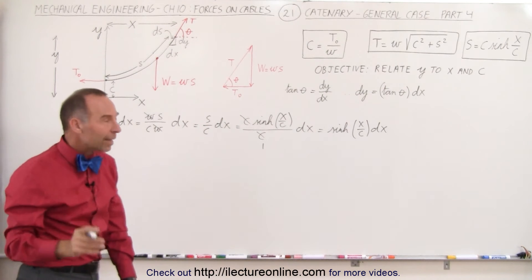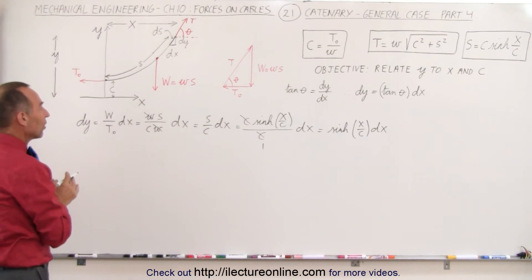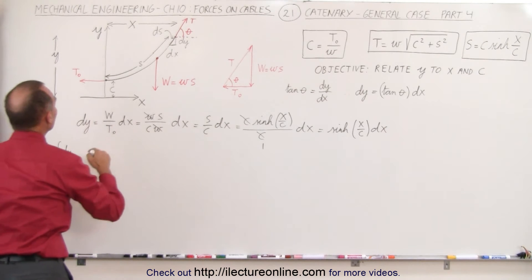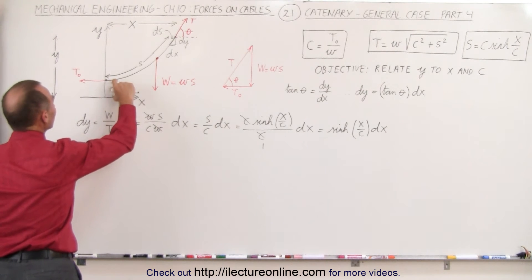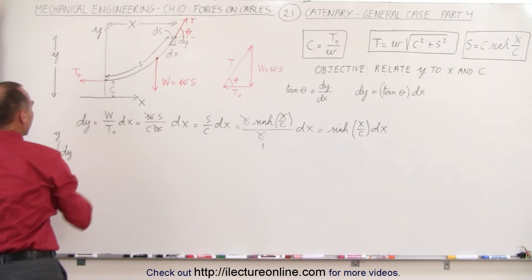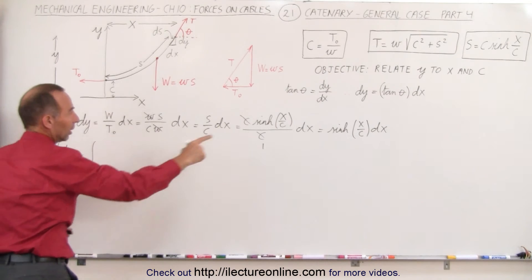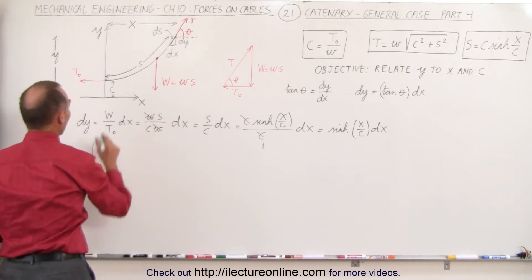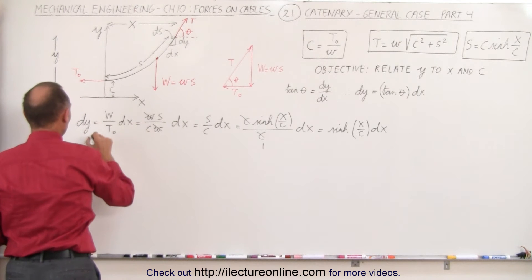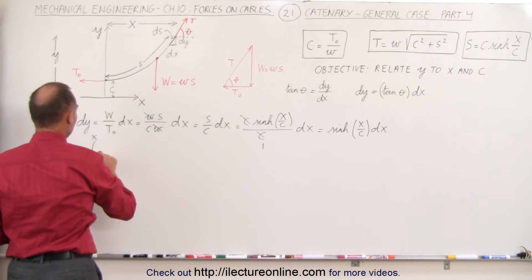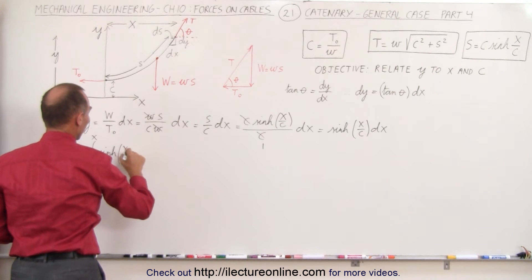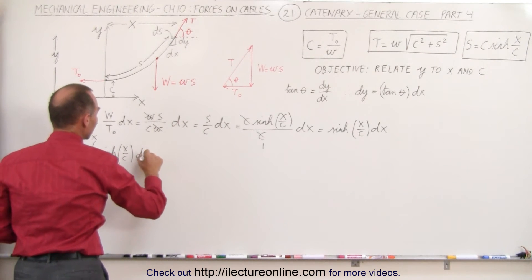What we can now do is integrate both sides. We're going to integrate dy from the bottom of the cable, which is C, to the top of the cable, which is Y. That is going to be equal to the integral from 0 to X of the hyperbolic sine of the quantity X over C times dx.